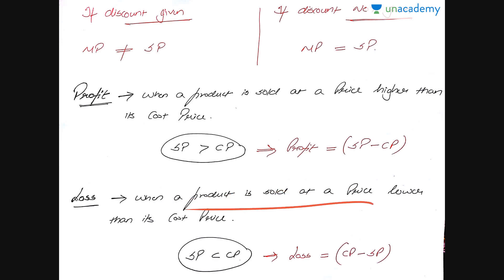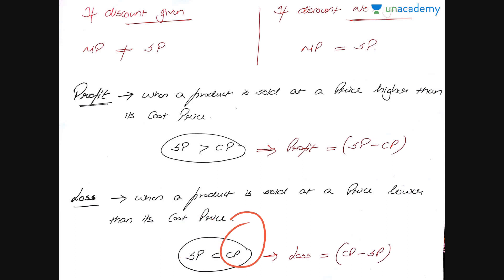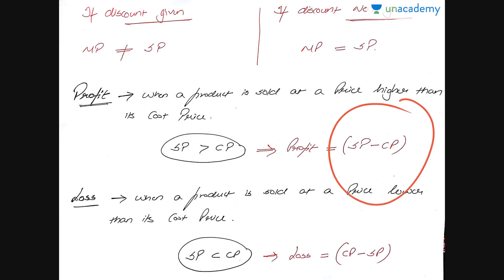When a product is sold at a price lower than its cost price, I'm making a loss. For example, I buy a product for 50 rupees but customers aren't interested, so I decide to sell it off for 30 rupees — just to compensate for as much of the cost price as I can. So I'm making a loss of 20 rupees. Profit is when selling price is greater than cost price; loss is when selling price is less than cost price.